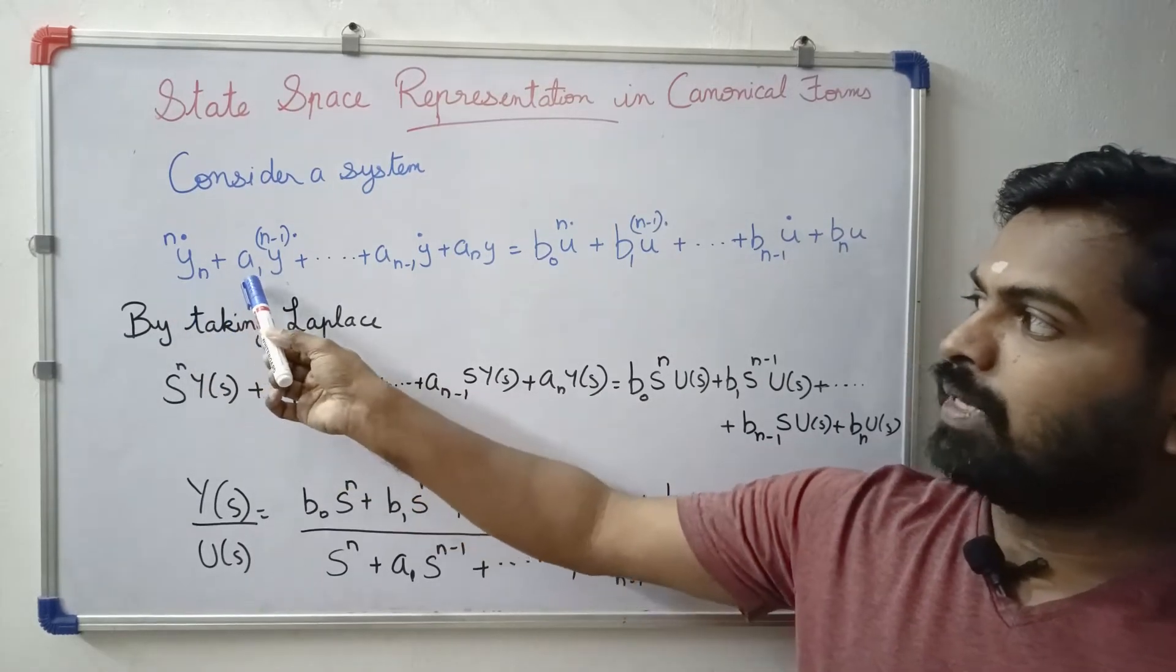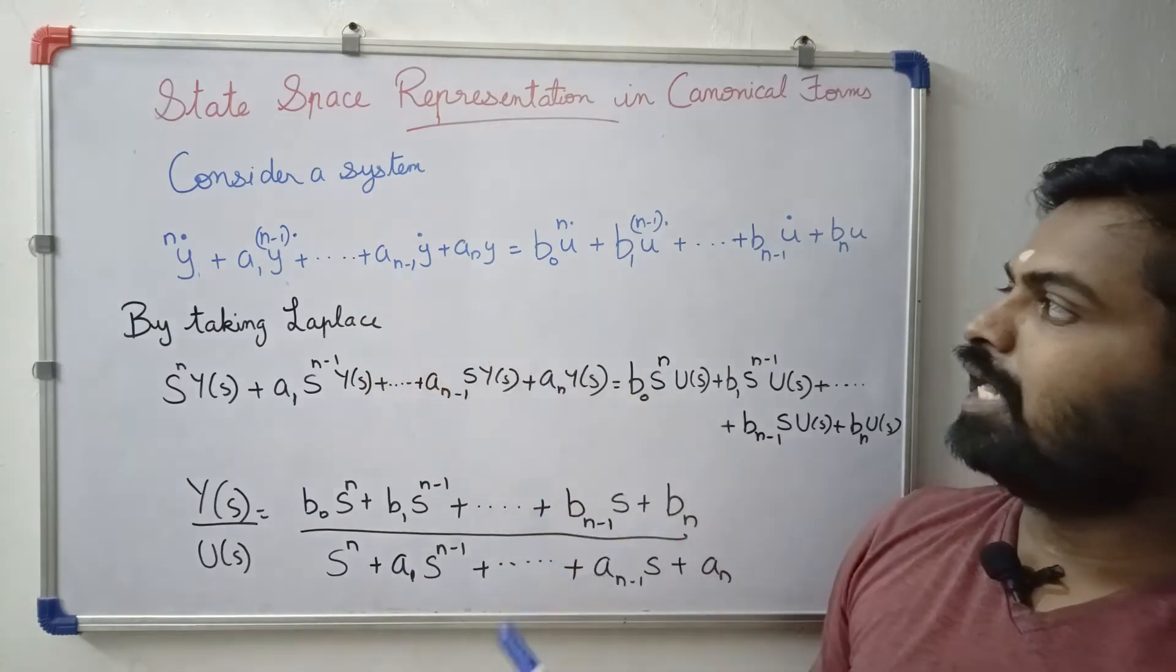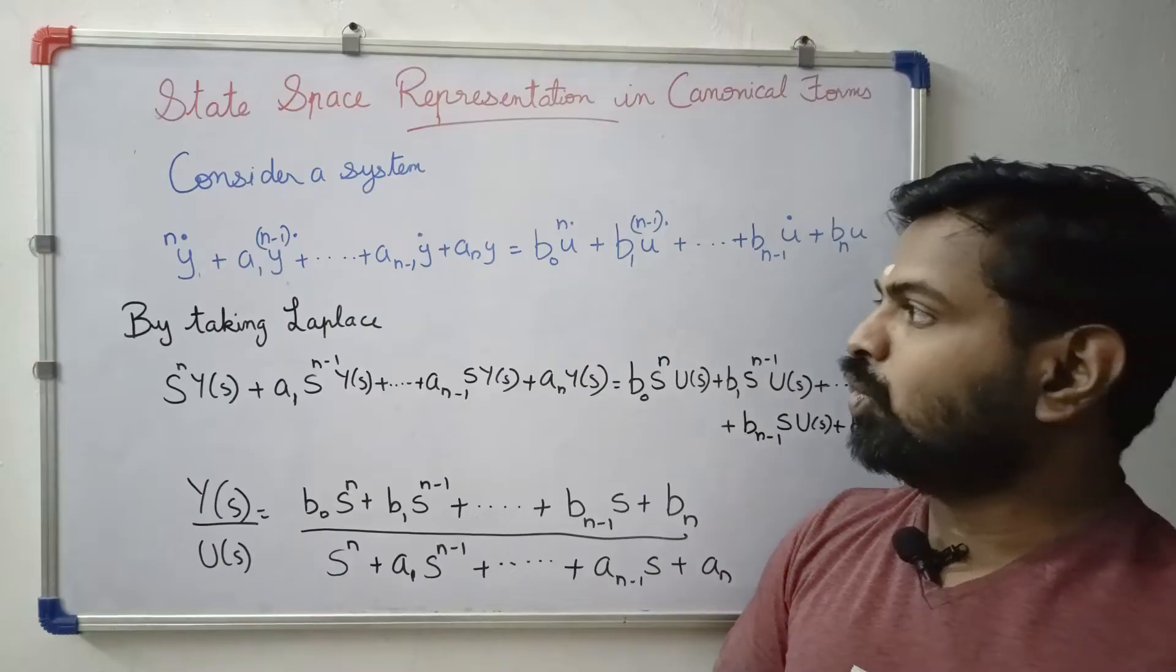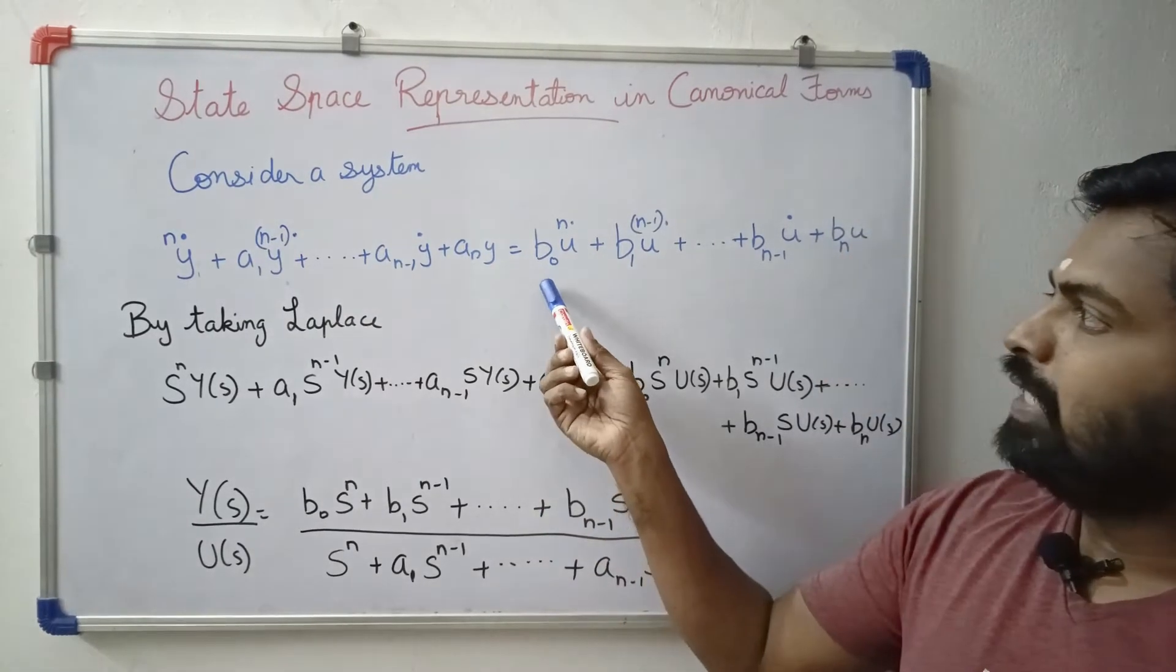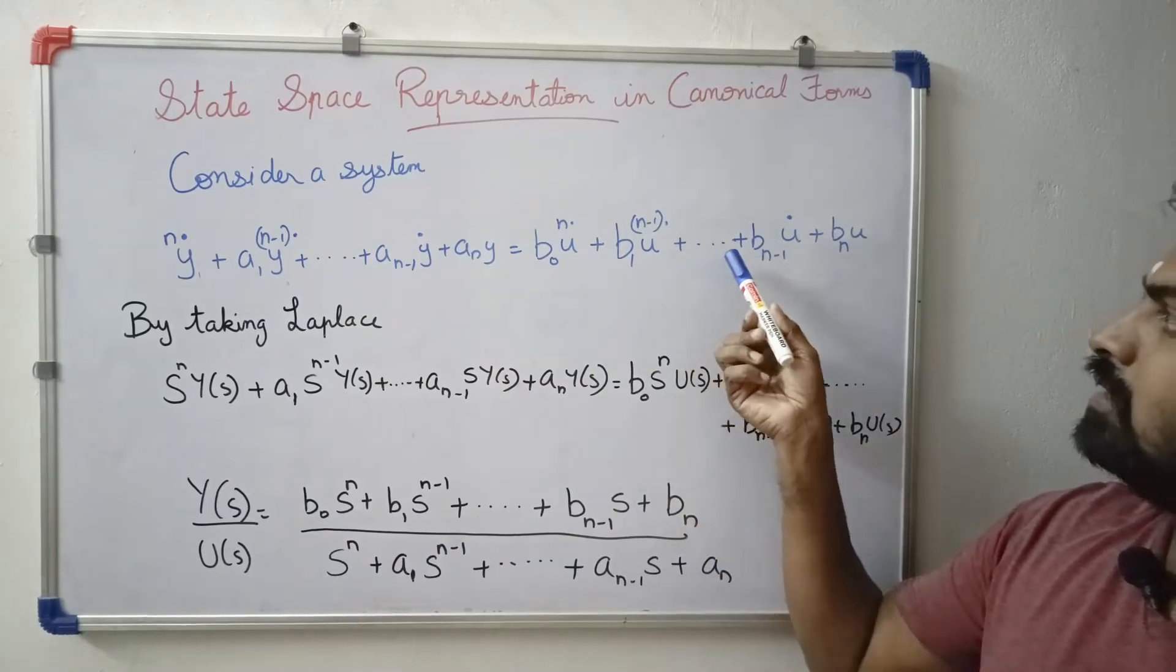This is a differential equation. Now, y^n dot plus a1 y^(n-1) dot plus a(n-1) y dot plus an into y equals b0 u^n dot plus b1 u^(n-1) dot plus etc. plus b(n-1) u dot plus bn times u.